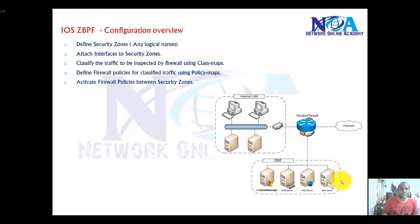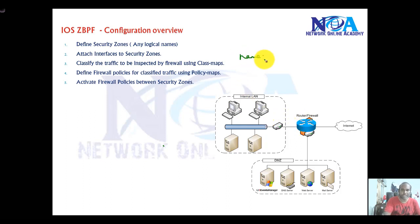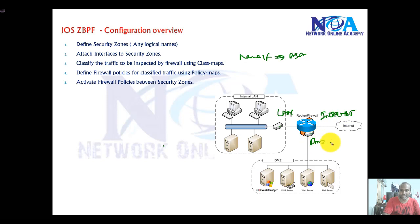The next thing we'll see is a configuration overview of the zone-based firewall. In zone-based firewall, the first thing we do is create some zones — more like a name-if configuration on the ASA firewalls. We need to define some names like LAN, Internet, and DMZ. Then we need to associate these — typically called security zones — to the interfaces.